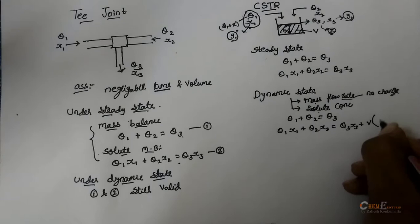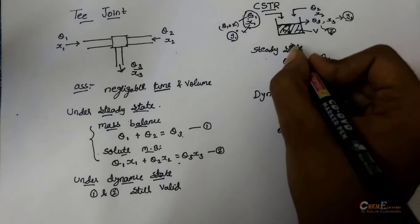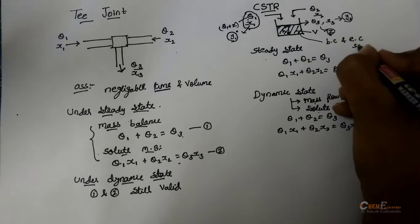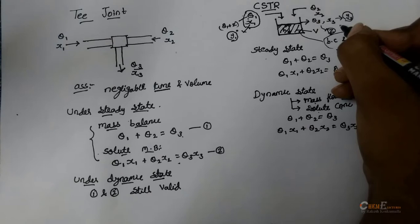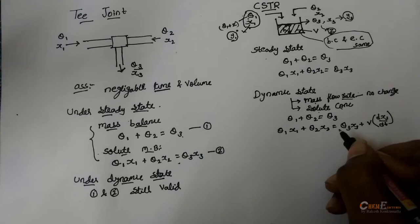In CSTR, the bulk concentration and exit concentration are same. So, for total change in the exit stream should require definite amount of time to complete or to reach new steady state. So, to this gradual change of exit concentration may be accounted in the equation and we have introduced a new term.